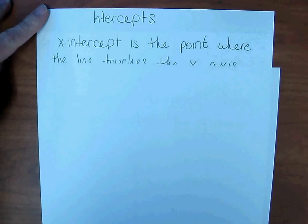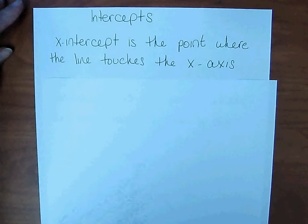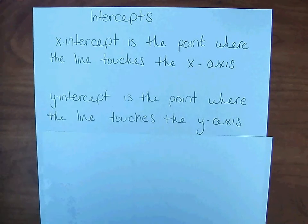Intercepts. On a graph, there are two intercepts. There's the x-intercept, which is the point where the line touches the x-axis. Then there's the y-intercept, and that is the point where the line touches the y-axis.